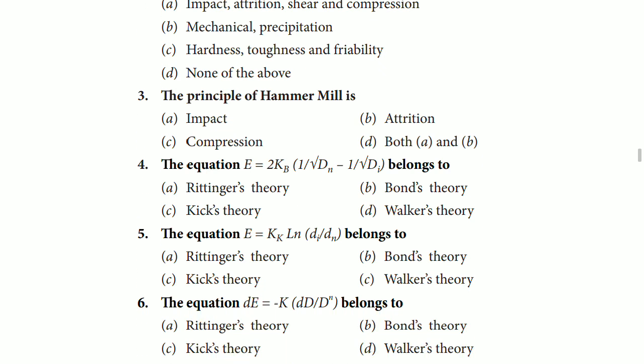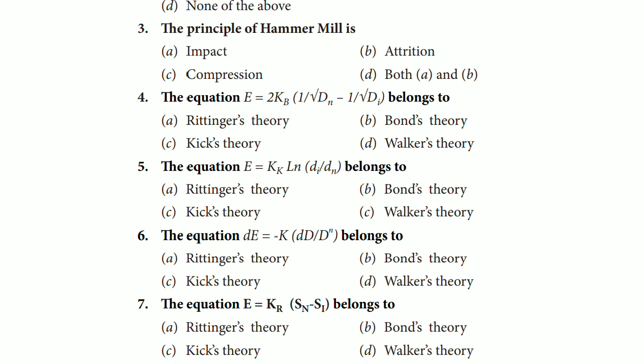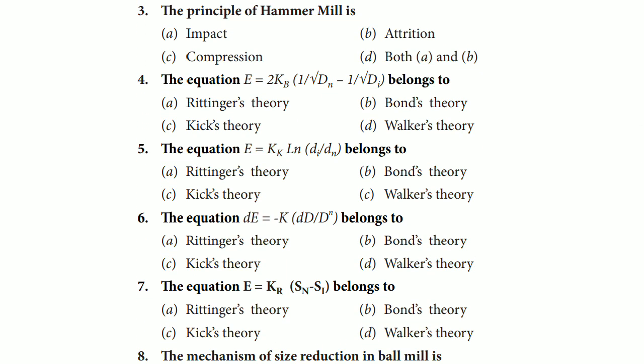Moving to the next question, question number 3: the principle of hammer mill is option A impact, B attrition, C compression, and D both A and B. In both these mills like hammer mill and ball mill they are based on combination of impact and attrition. So the correct answer is option D, that is both A and B.